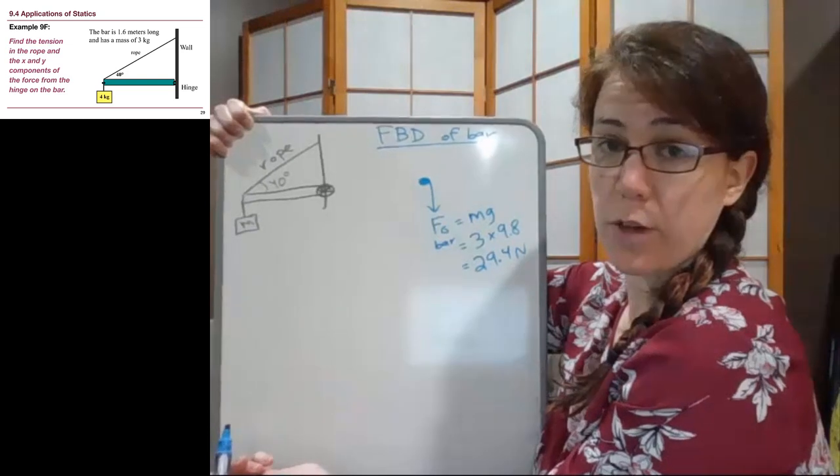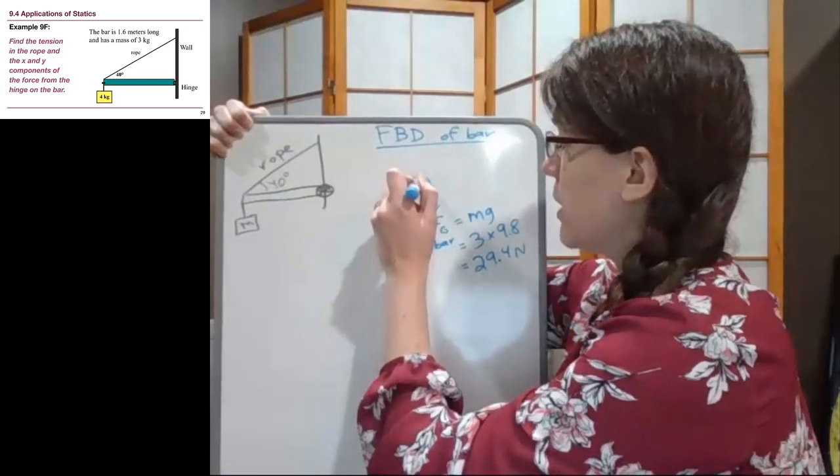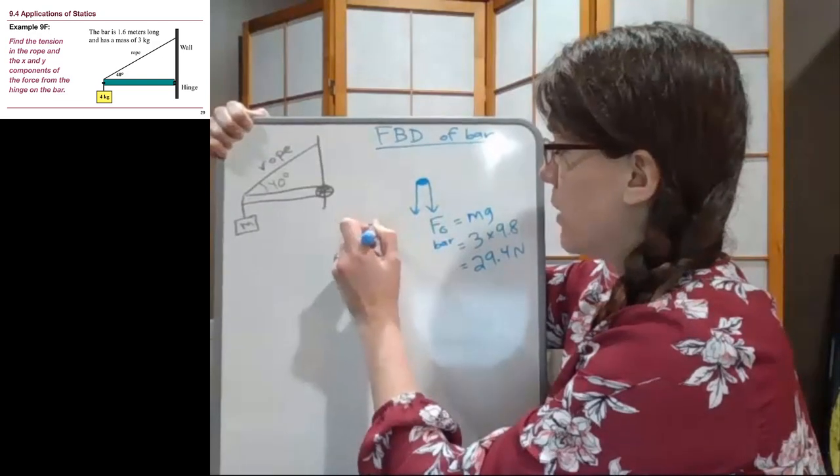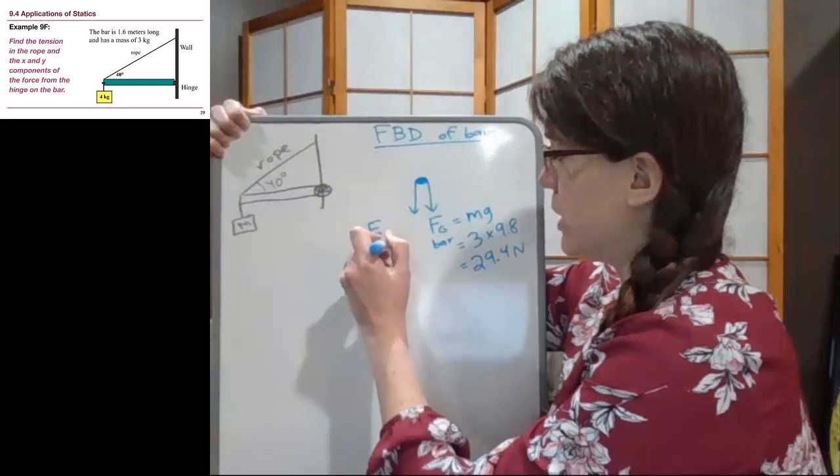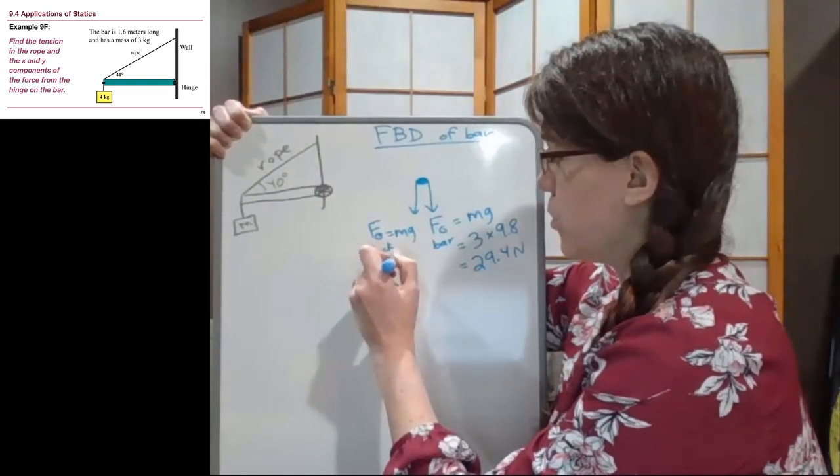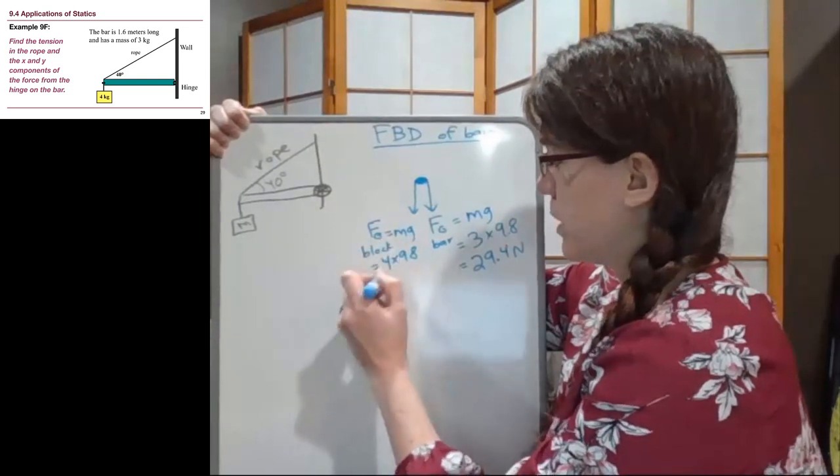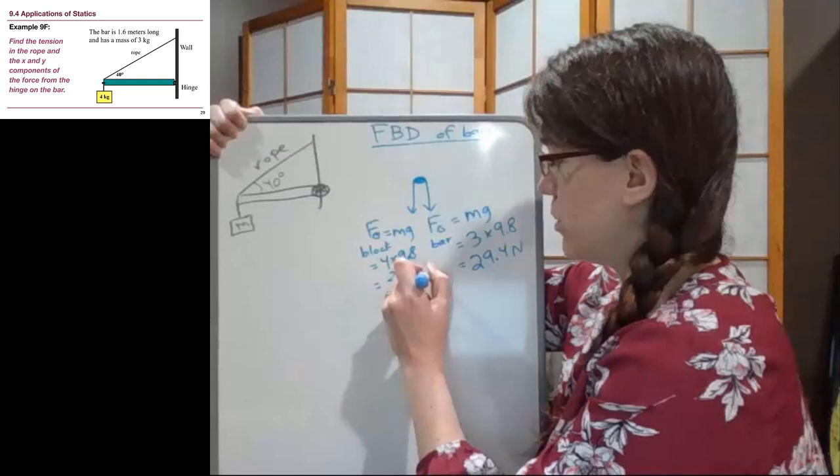And we have the force of gravity of the load mass, the 4 kg load mass, and so fg of the extra block that we've attached to it is mg here, which in this case is 4 times 9.8, and so we get 39.2 newtons.